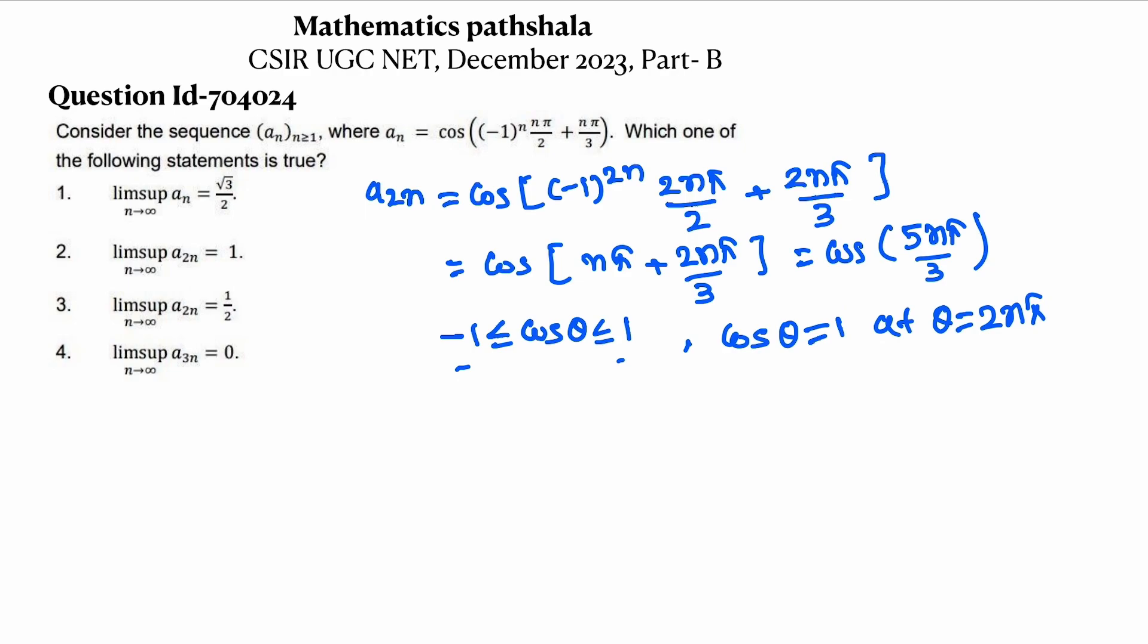Now we want to check: can a_2n take the form of 2nπ or not? If I put n = 3, then what we get? a_6 equals cos(5π). That is not form of 2nπ. So it gives -1.